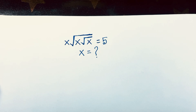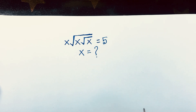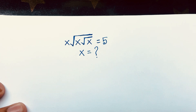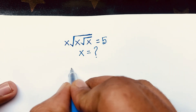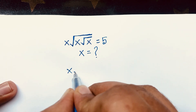Hello everyone. In this video we have solved this square root question: x square root of x square root of x is equal to 5, and we'll find out what is the value of x in this math question. So how to solve this question — first of all I can see our question is x square root x square root x is equal to 5.